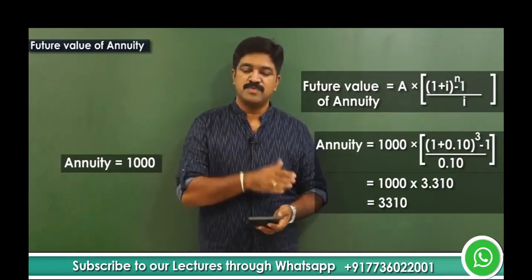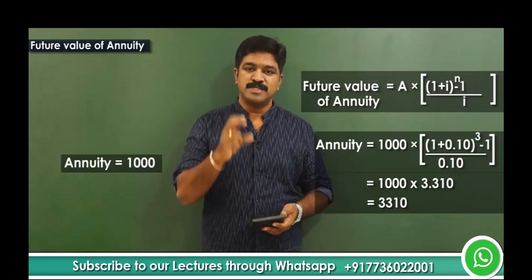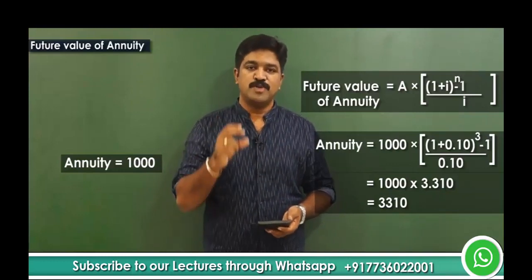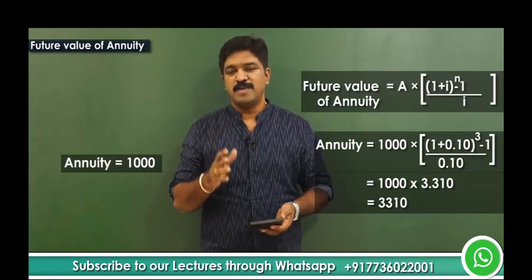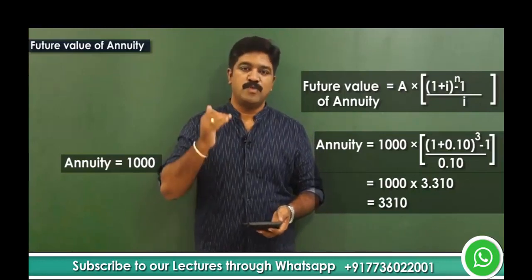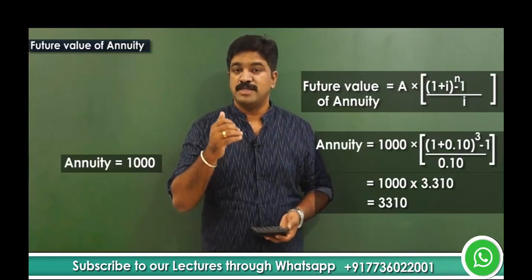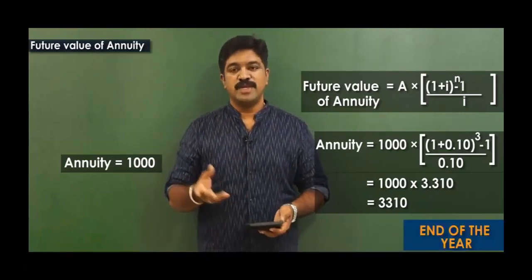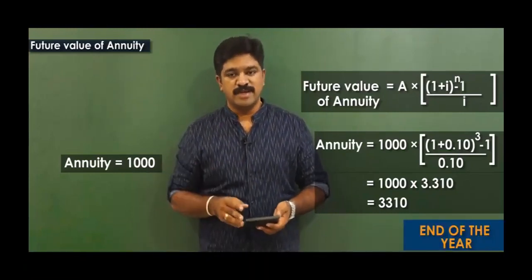This tallies exactly with what we derived from the table. This is the formula you will use for finding the future value of annuity. But keep one thing in mind: this formula works on the assumption that cash flows take place at the end of the year. If cash flows occur at the beginning of the year, the approach will be slightly different.